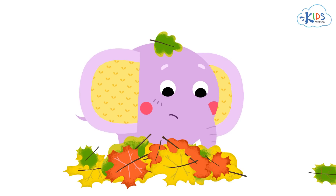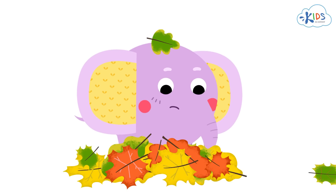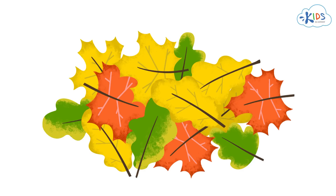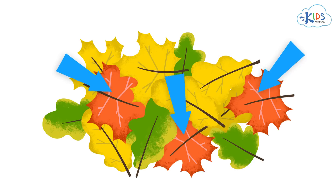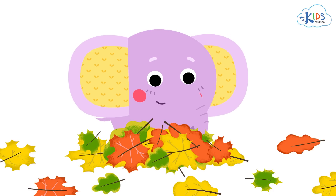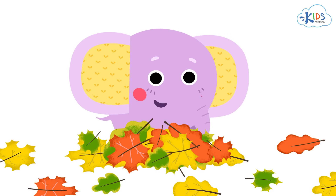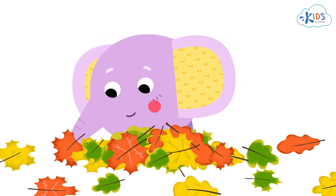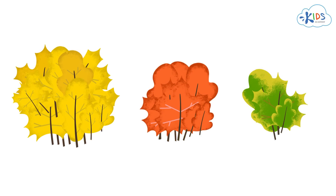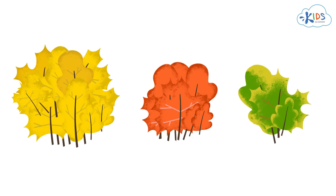Apart from the shape and size, is there any other way to sort these leaves? I think we can also sort them by color. They are all of different colors. Not exactly — some leaves are yellow, some are red, and some are two-colored, yellow and green. Let us see how many leaves of each color there are. Yellow leaves are the most, red leaves are less, and yellow and green leaves are the least.